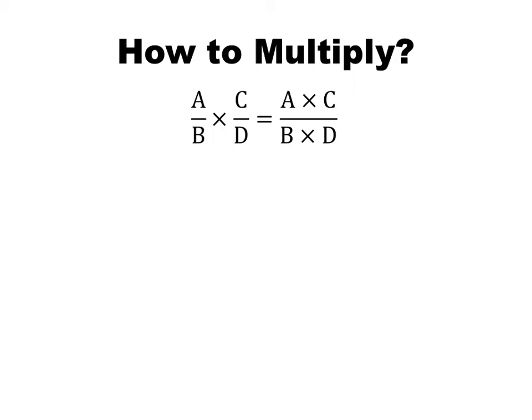The next question is how do we multiply? The algorithm is very simple: we simply multiply the numerators, multiply the denominators, and we're done.